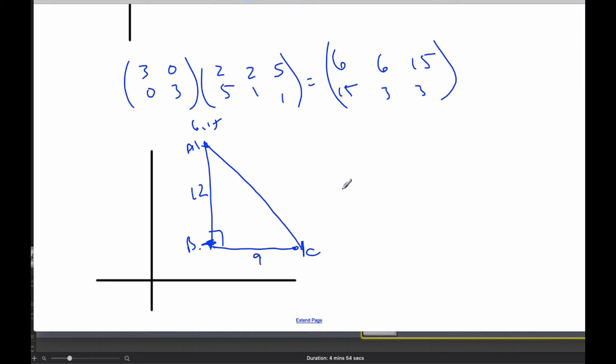So if I want to find the area of this triangle now, the area is going to be half times 12 times 9. Well, that's 6, and so I get 54.